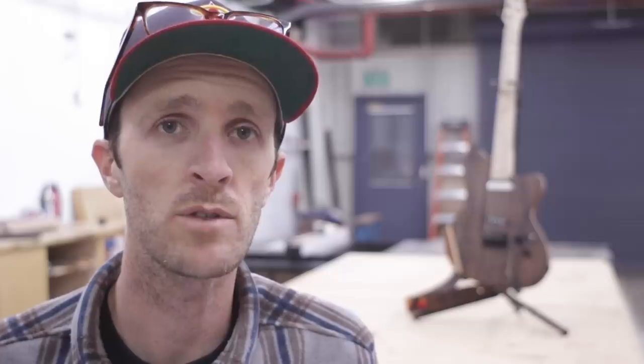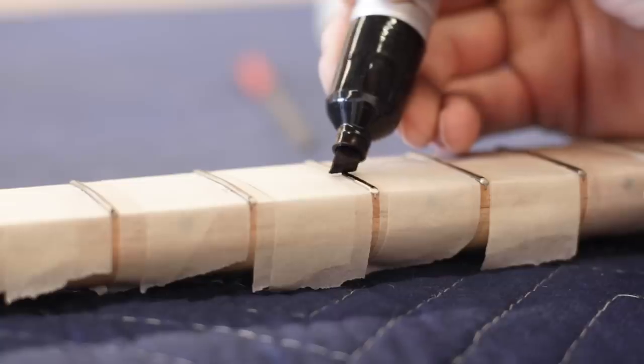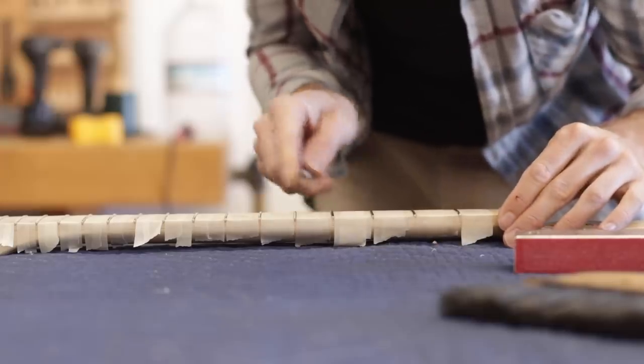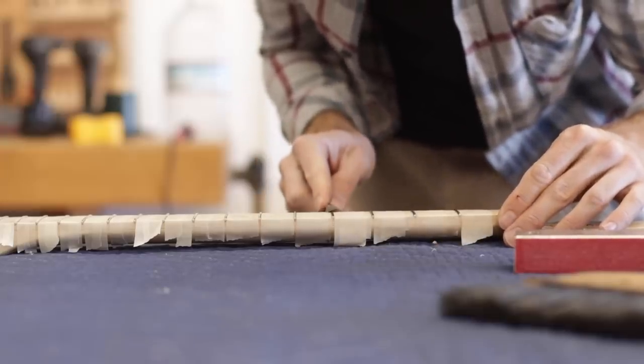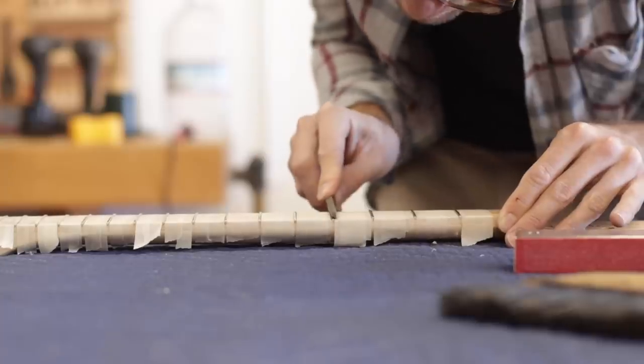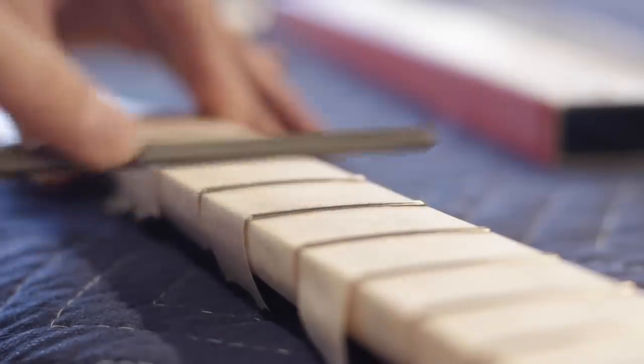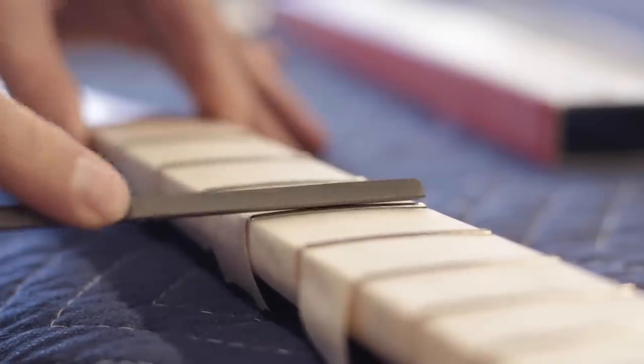Once the frets are level, they'll most likely have a flat spot on the top of each one, so they need to be shaped again. So a bit more marker on each one, then by using a triangular file you can slowly bring them back to the desired shape. The marker will show when you've rounded the fret to the top center of each one, when there's just a thin line of ink left.